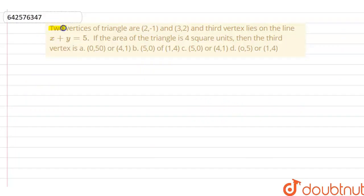The question is: two vertices of a triangle are (2, -1) and (3, 2), and the third vertex lies on the line x + y = 5. If the area of the triangle is 4 square units, then find the third vertex.